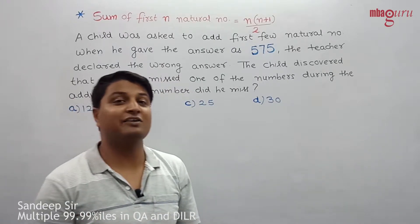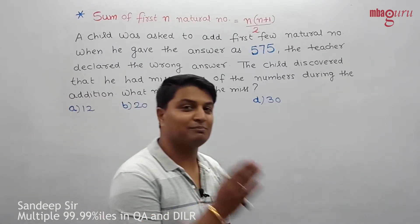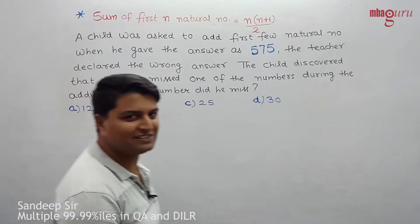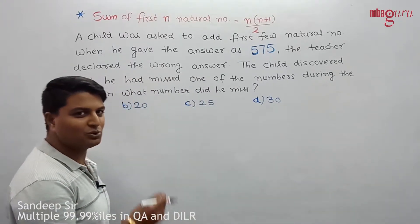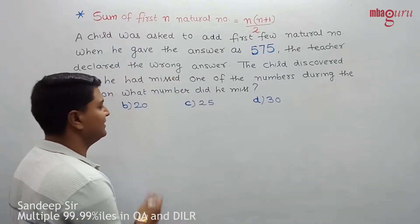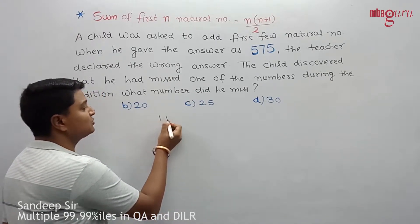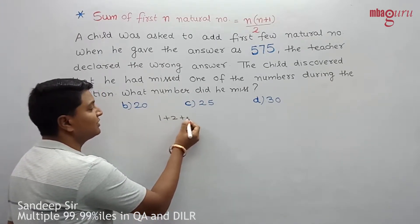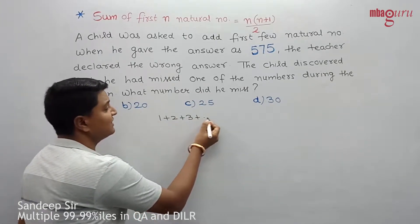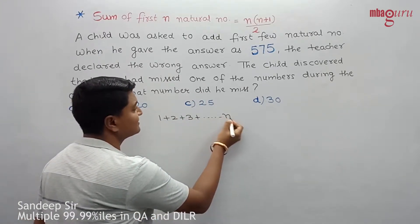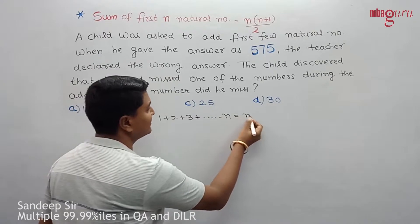So how do we solve this type of question? If n is the number of first natural numbers being summed, we need to find n such that the sum is close to 575 but one number was missed.